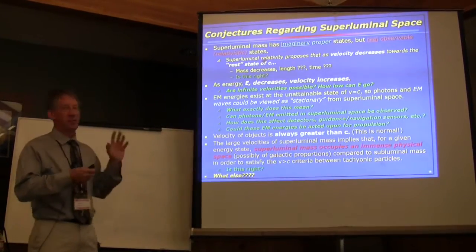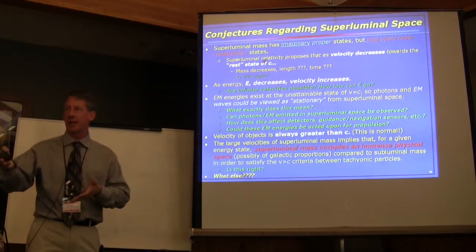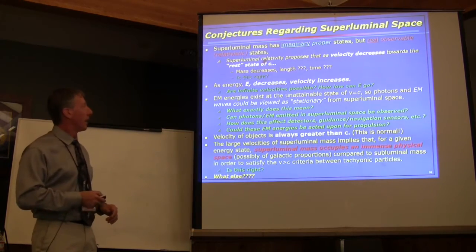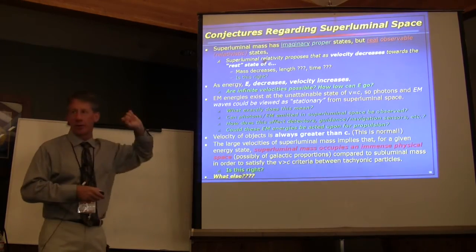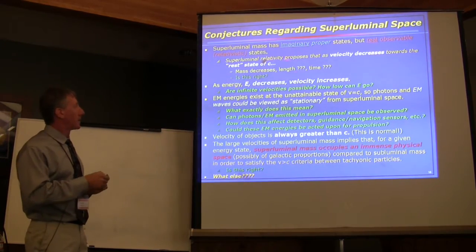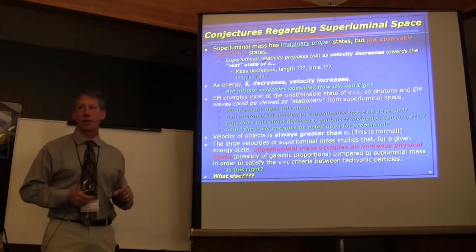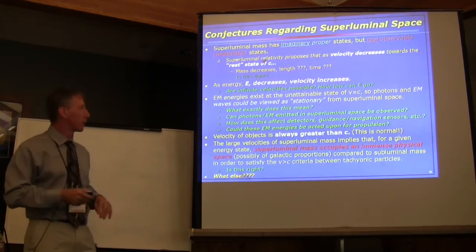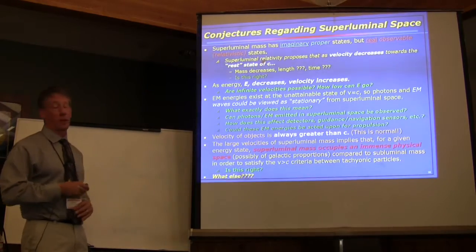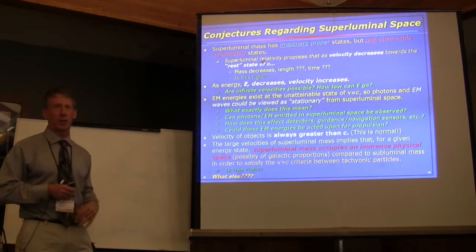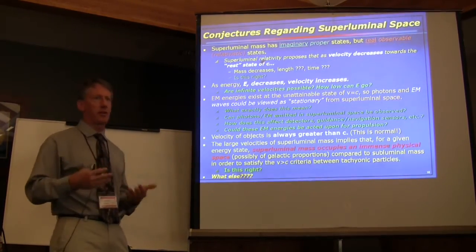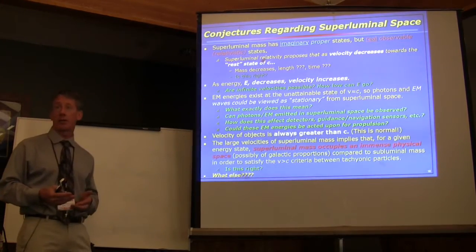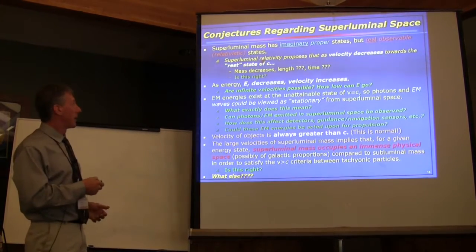It is an artifact of superluminal based on the algebraic manipulations of relativity, as done in the Pusher paper. As energy decreases, velocity increases — that's just another algebraic artifact of the curves. Are infinite velocities possible? When we start throwing numbers like 10 to the 35 and 10 to the 21c, that's pretty much infinite.